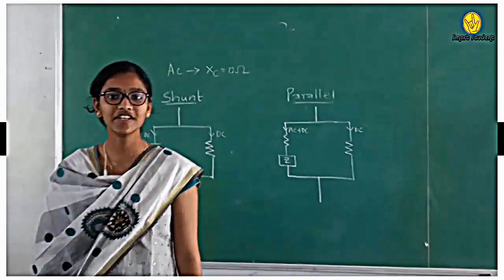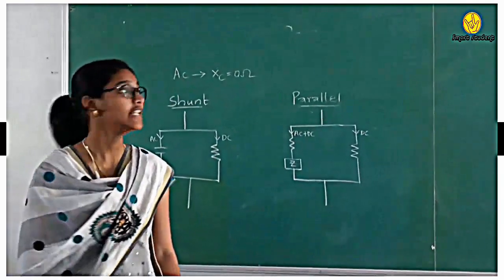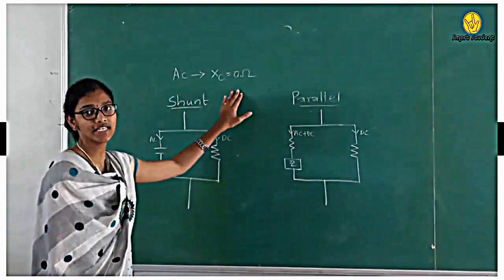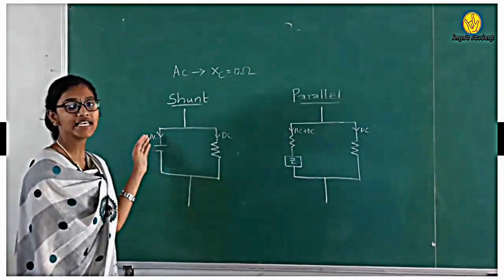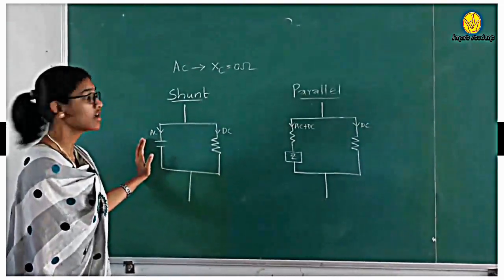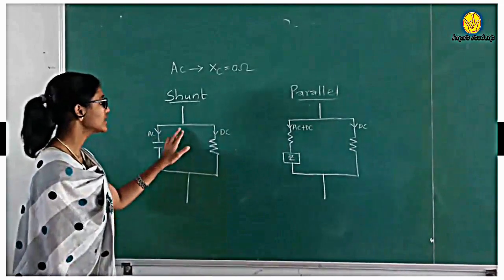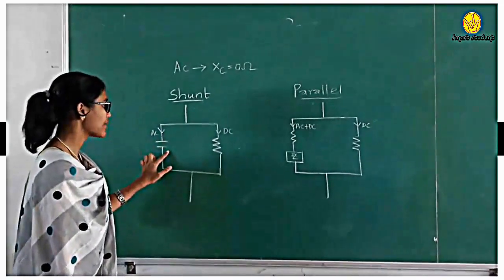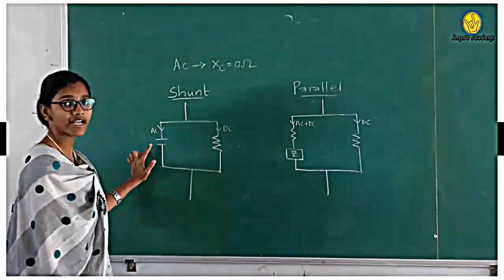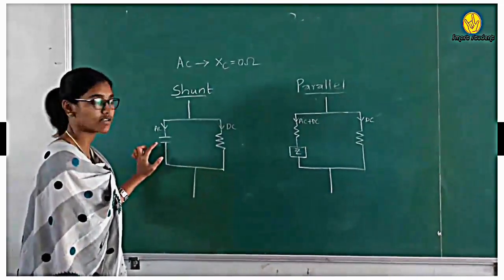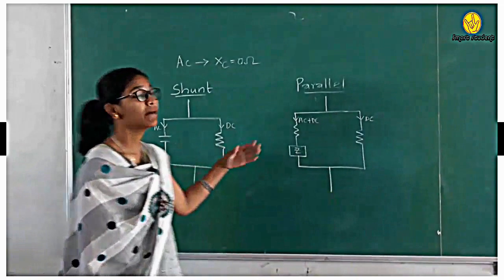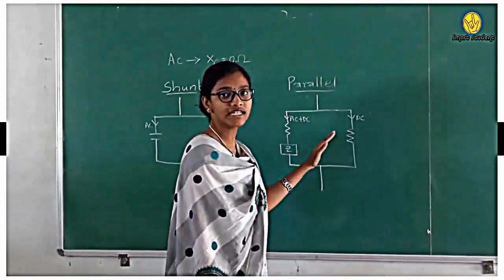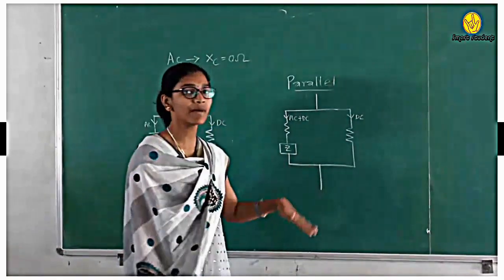Do you know the difference between shunt and parallel? For an AC current, the capacitive reactance is zero ohms. That means for an AC, a capacitor acts as a short circuit. In this circuit, the current is being split as AC and DC. AC flows through this capacitor because here the capacitor action is a short circuit. This is called a shunt circuit. Whereas in a parallel circuit, the current does not vary in types. So this we call it as a parallel circuit.